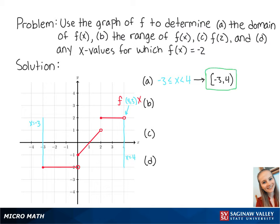For letter b, the range of f of x is the set of all y values within the function. Looking at the graph, we can see that the smallest value of y is negative 2 and the highest value of y is positive 2. However, the y values between negative 2 and negative 1, and the y values between 1 and 2, do not exist. The point (0, negative 1) does exist, so we can include negative 1.